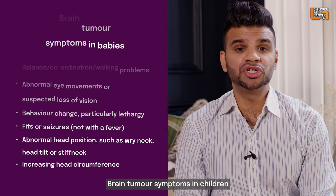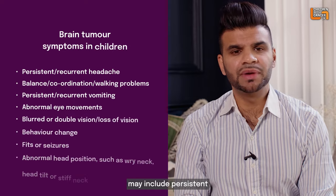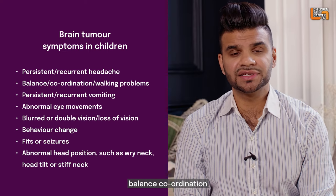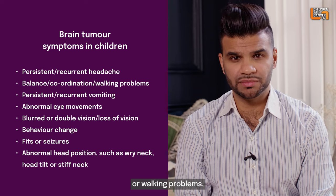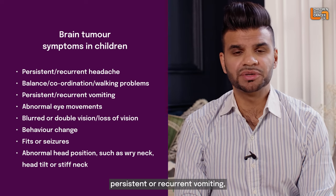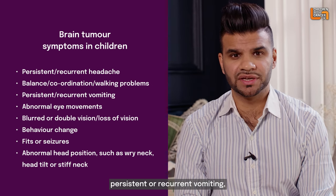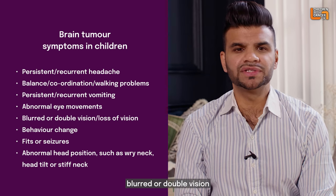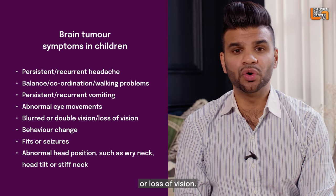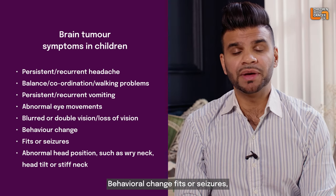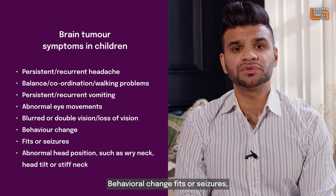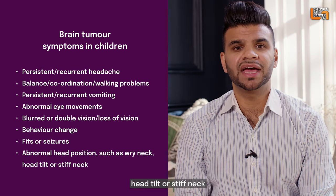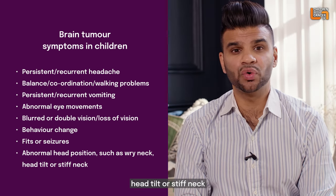Brain tumour symptoms in children may include persistent or recurrent headache, balance, coordination or walking problems, persistent or recurrent vomiting, abnormal eye movements, blurred or double vision or loss of vision, behavioural change, fits or seizures, abnormal head position such as wry neck, head tilt or stiff neck.